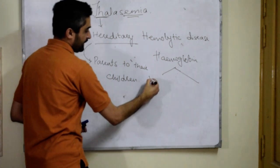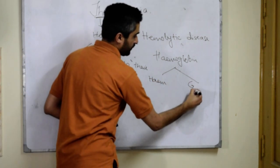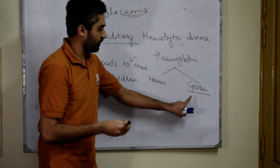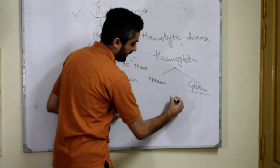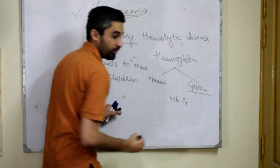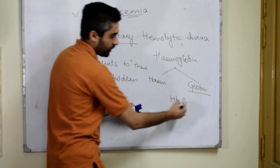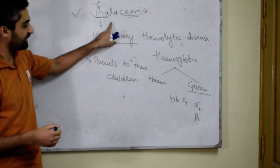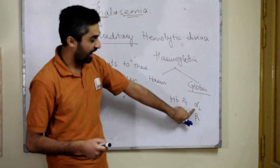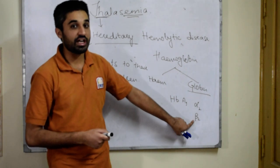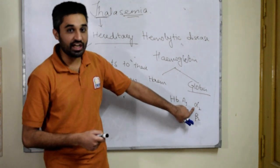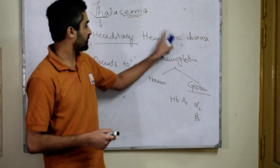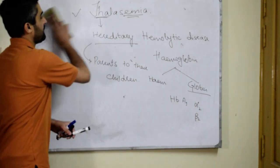By now we know that hemoglobin is manufactured. It is made up of two things: number one, heme, and number two, globin. In thalassemia, the globin — for example in hemoglobin A1 — has four chains: two alpha chains and two beta chains. In thalassemia, these alpha chains or these beta chains are defective. If the alpha chains are defective, it is called alpha thalassemia. If the beta chains are defective, it is called beta thalassemia.